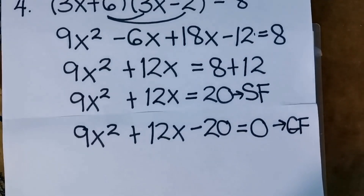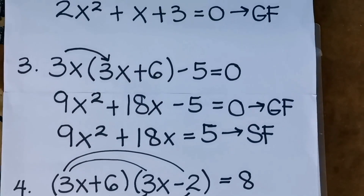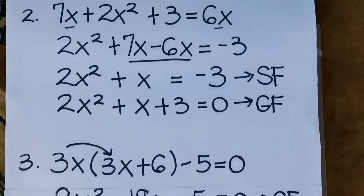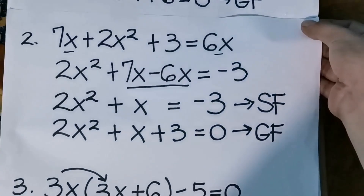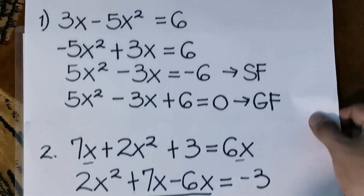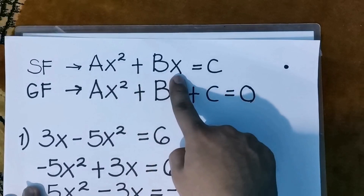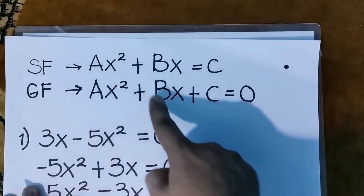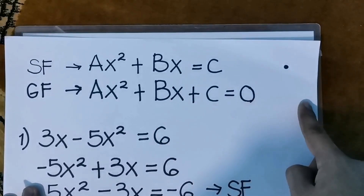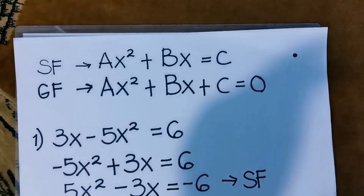That concludes our lesson for today about expressing quadratic equations in both standard form and general form. Remember: standard form is ax squared plus bx equals to c, and general form is ax squared plus bx plus c equals to 0. Don't forget to subscribe, like, and share this video, and stay tuned for more video tutorials. Thank you for watching.